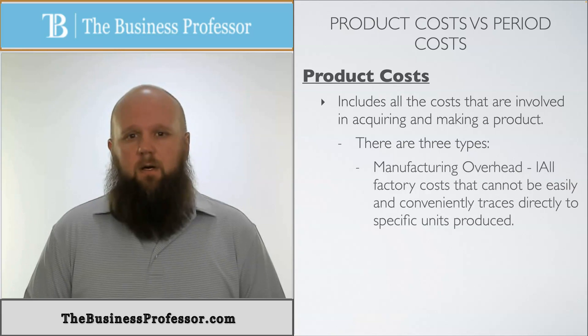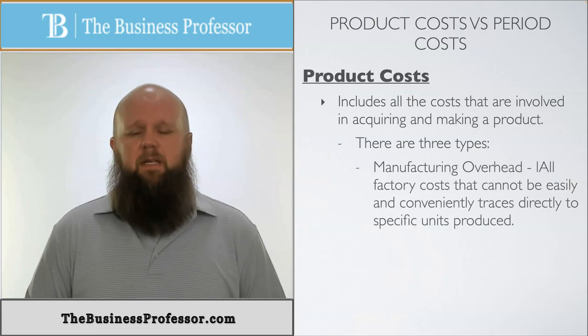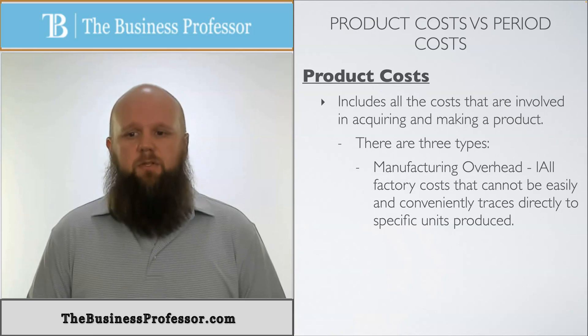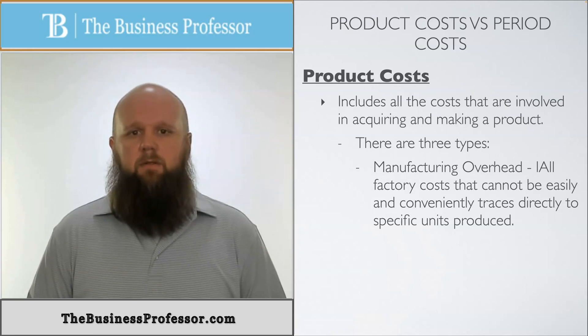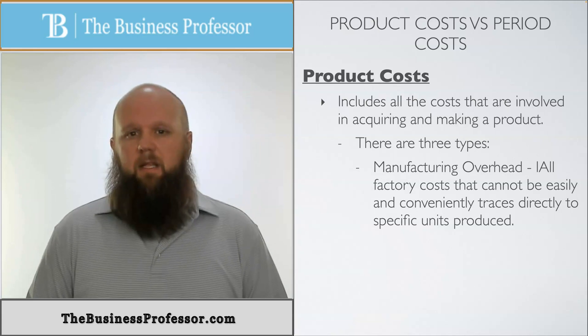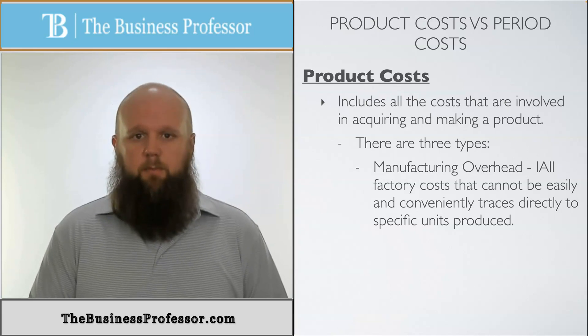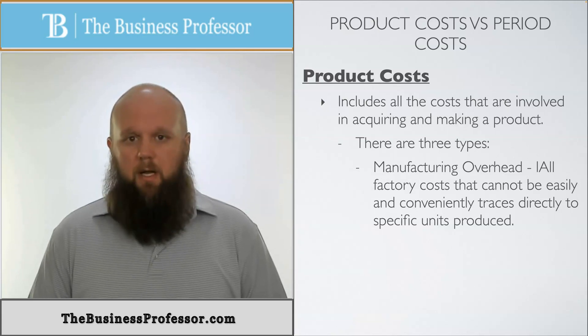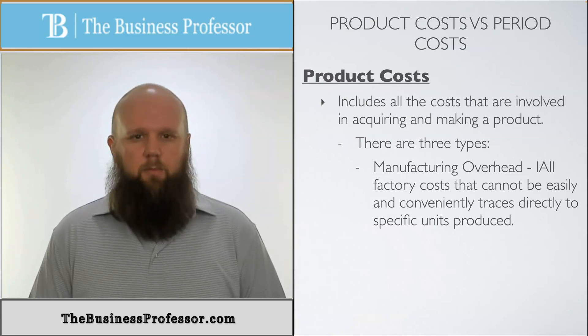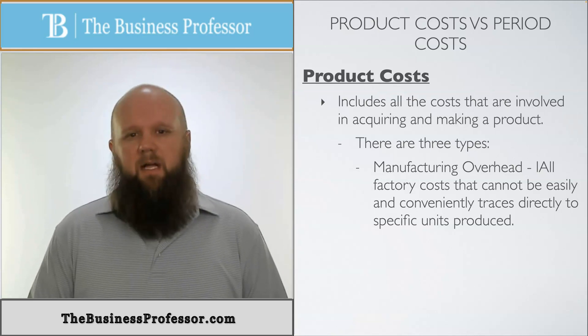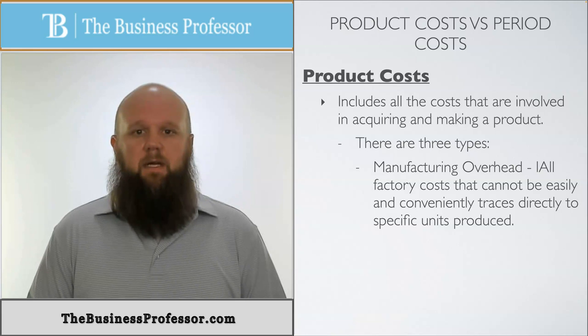The third category is manufacturing overhead. Manufacturing overhead are all of the factory costs that cannot easily or conveniently be traced directly to a specific unit produced. The best way to think about manufacturing overhead is it's the indirect cost that's associated with building the product. So if it is a cost going into the creation or manufacturing of the product, and it's not direct material and it's not direct labor, then by default it falls into the manufacturing overhead category.